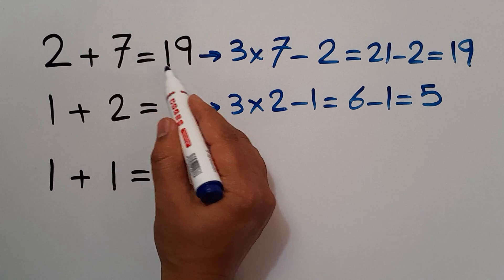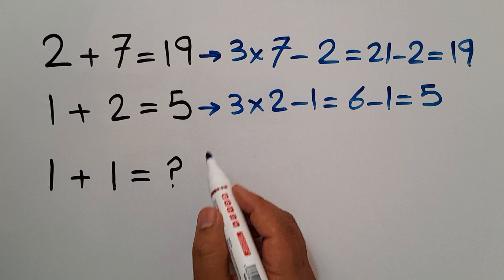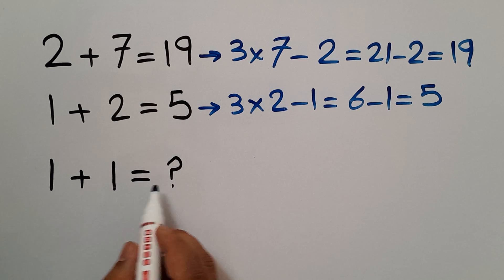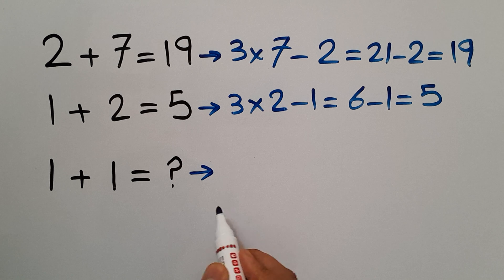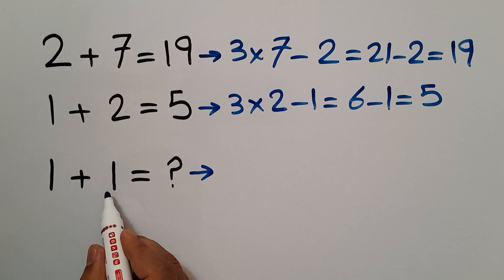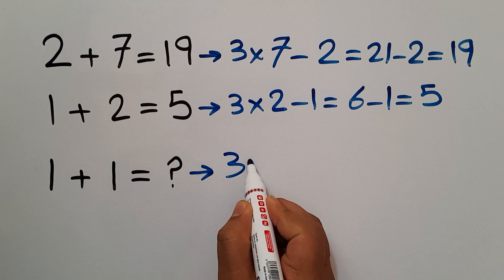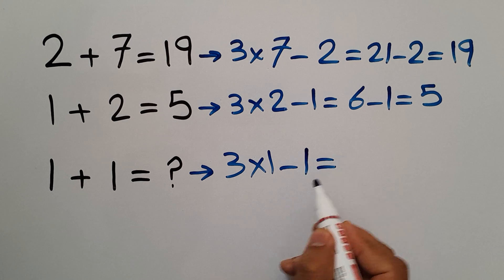Let's use this pattern to find the missing number in the third equation. 3 times second number, our second number is 1, so 3 times 1 minus first number which is 1 equals 3 times 1 gives us 3.